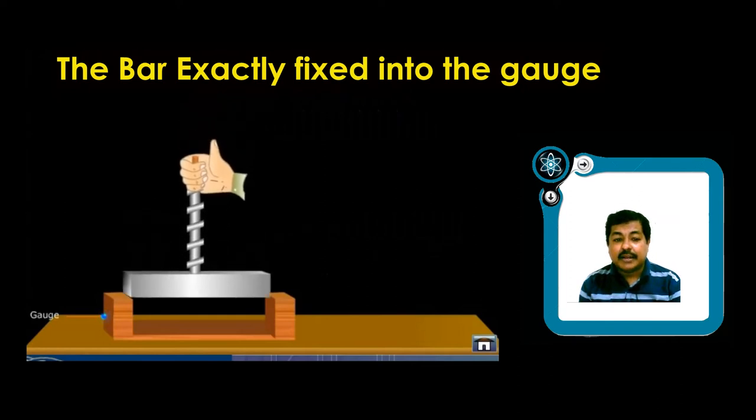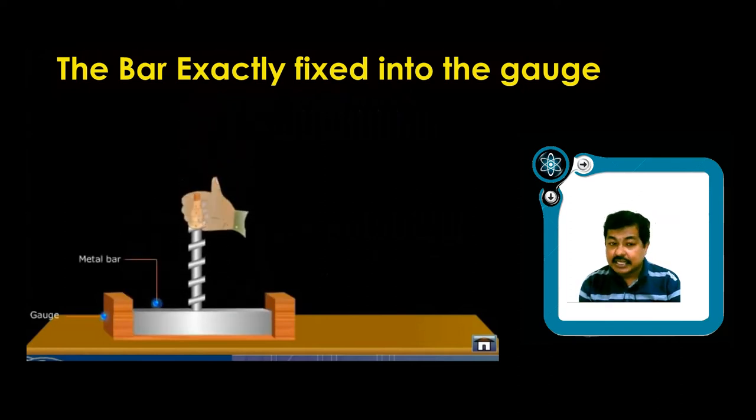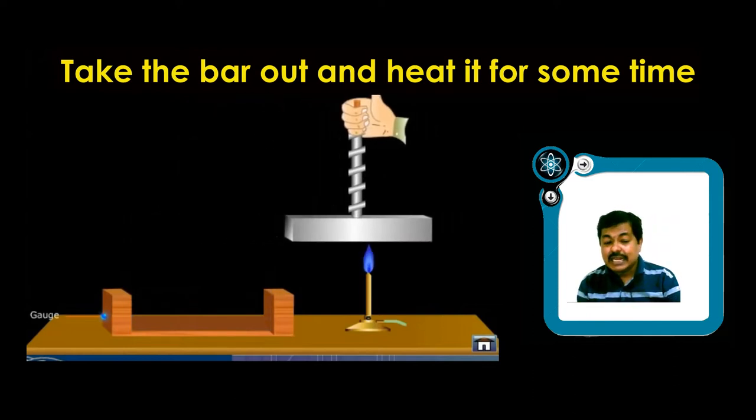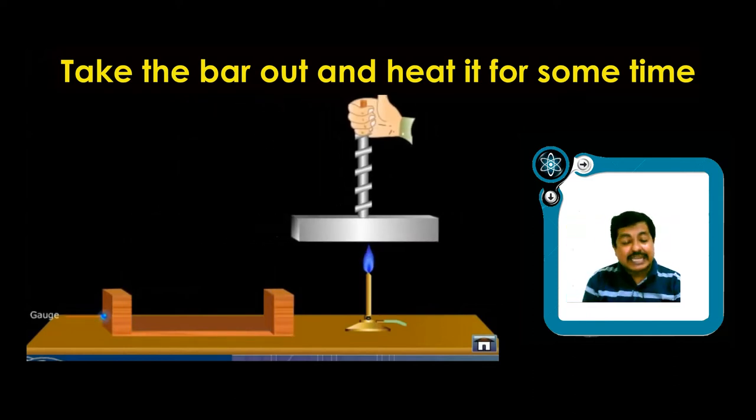If I take the iron bar and try to fix it into the gauge, you can see the iron bar exactly fits into the gauge. But if I start heating it up, what will happen after heating?